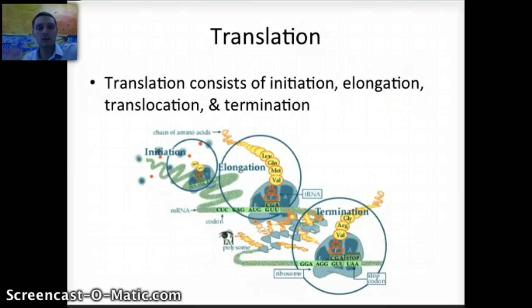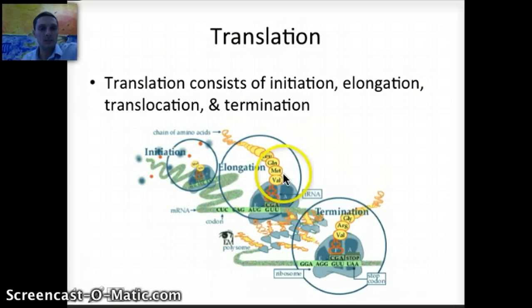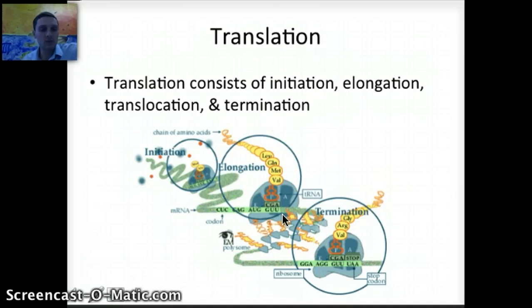Translation can be broken up into a couple of different parts. You need to know and be able to state that translation consists of: initiation, which is starting the process; elongation, which is adding more amino acids; translocation, which is the movement portion; and termination, which is the ending of the translation process. These four steps are part of translation.